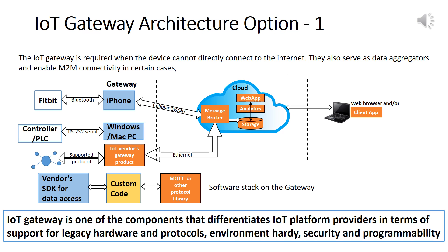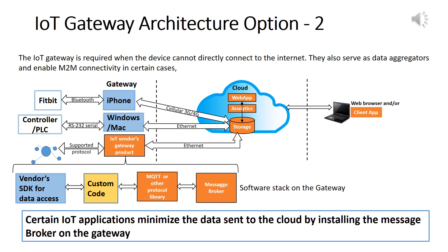IoT gateway architecture options: The next three slides present architecture options and the software stack on the device. The custom code utilizes the vendor's SDK to obtain data from the device, processes and packages it for transmission, and uses MQTT, AMQP, or other supported protocols to transmit the message to the broker. Fundamental to this architecture is the fact that the device itself cannot communicate over the internet with the Message Broker. In this option, the Message Broker is installed on the gateway. More and more IoT platforms are supporting Message Brokers on the gateway to minimize transmission of data to the cloud.